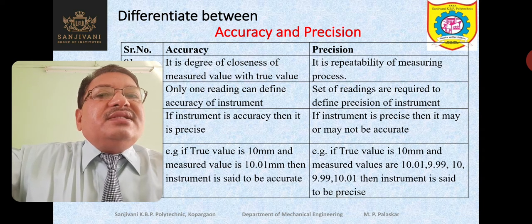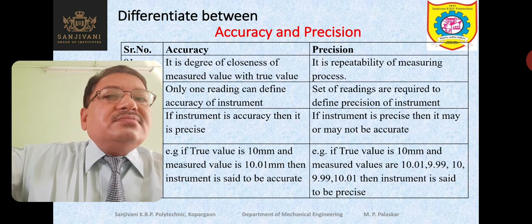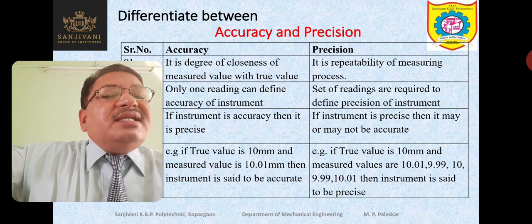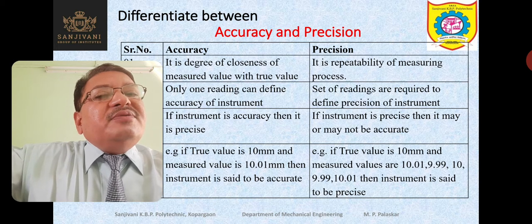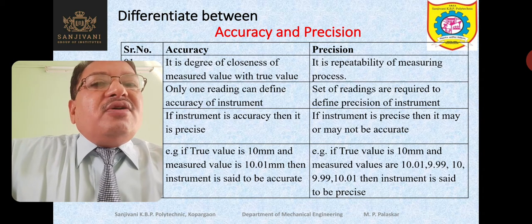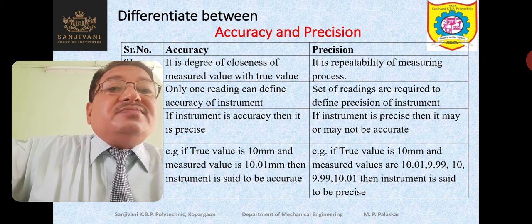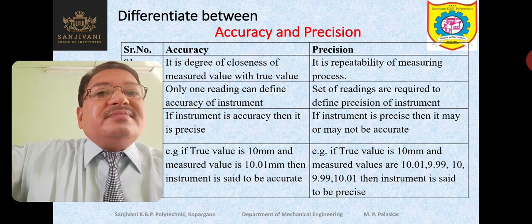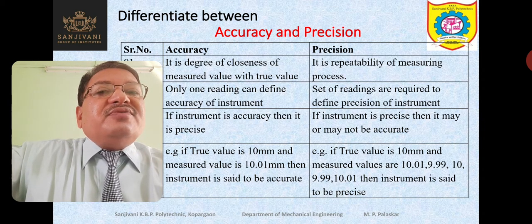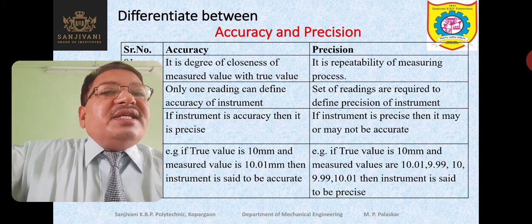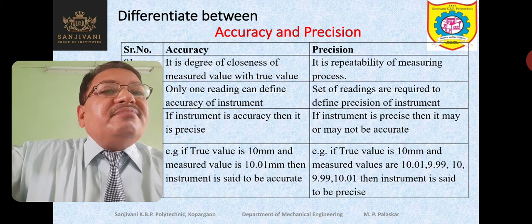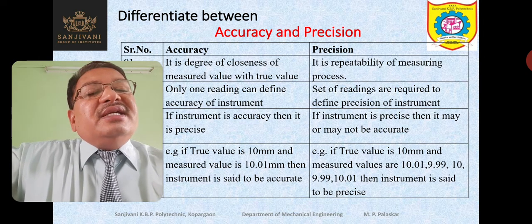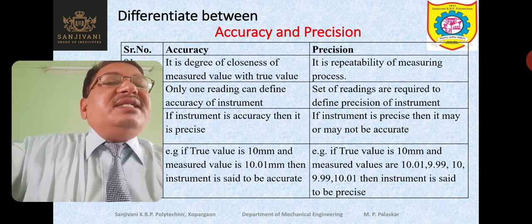Accuracy is the degree of closeness of the measured value with the true value, whereas precision is the repeatability of the measuring process. In precision, comparison is done between various values measured by the same instrument. But when we talk about accuracy, the comparison is done with the true value. Only one reading can define accuracy of an instrument, but in order to define the precision of an instrument, we have to take a set of readings — more than one — and compare them. If the difference between different readings taken by the same instrument is less, then we say the instrument is precise.